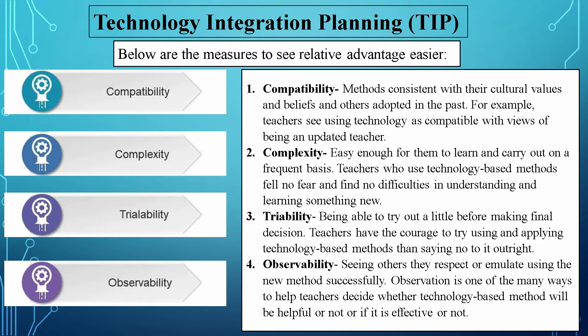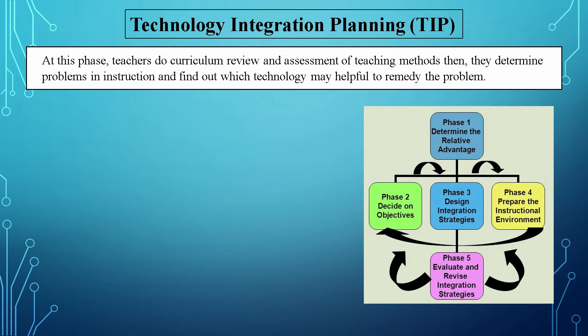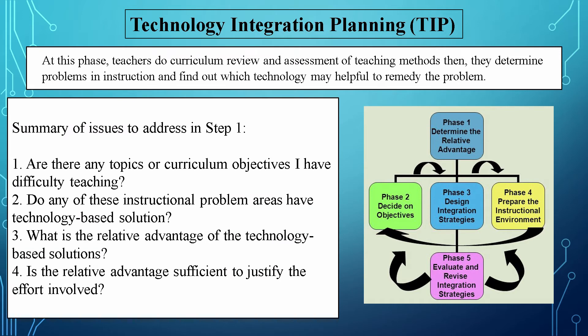Observation is one of many ways to help teachers decide whether a technology-based method will be helpful or effective. 5. At this phase, teachers do curriculum review and assessment of teaching methods, then determine problems in instruction and find out which technology may be helpful to remedy the problem. Summary of issues to address in Step 1: 1. Are there any topics or curriculum objectives I have difficulty teaching? 2. Do any of these instructional problem areas have technology-based solutions? 3. What is the relative advantage of the technology-based solutions? 4. Is the relative advantage sufficient to justify the effort involved?